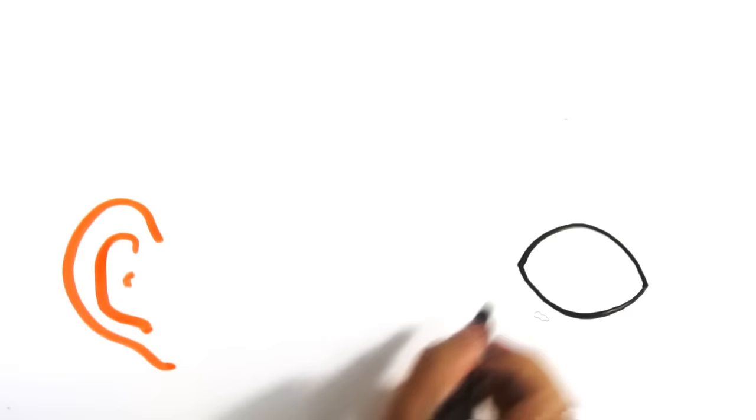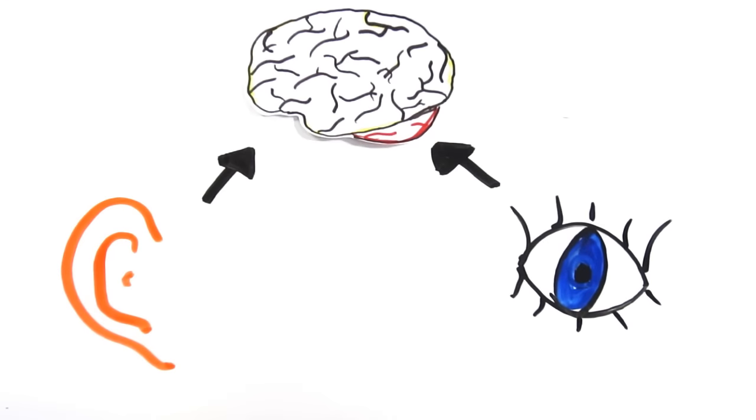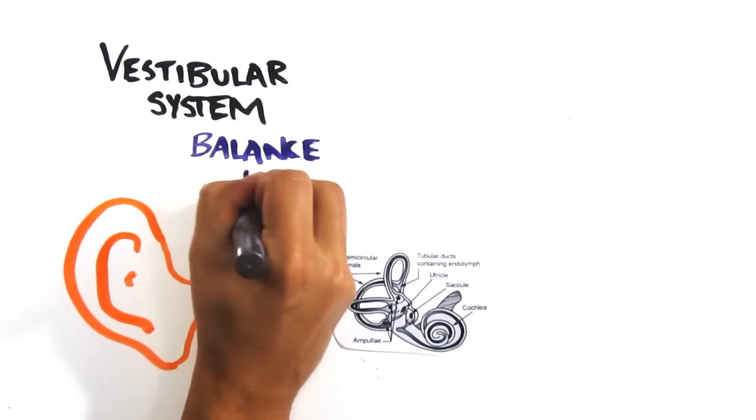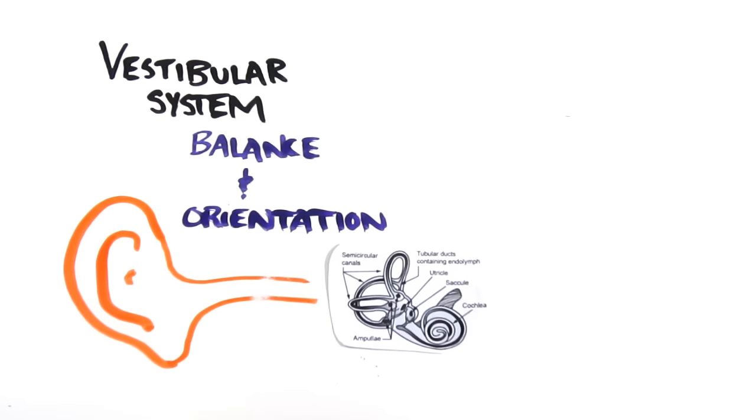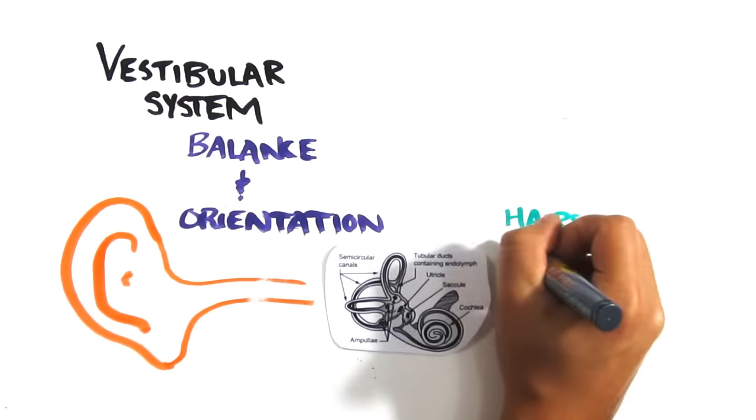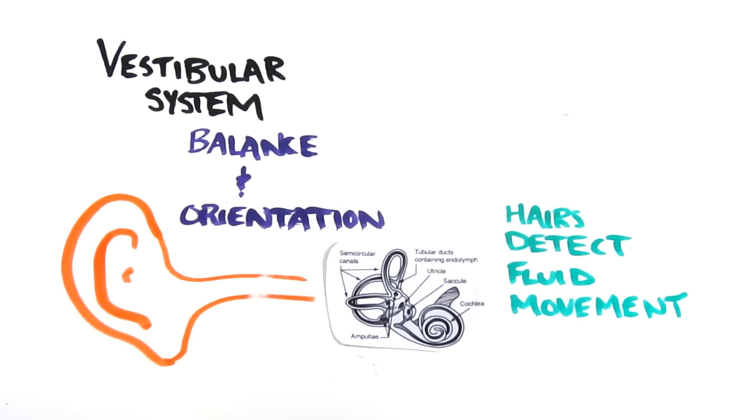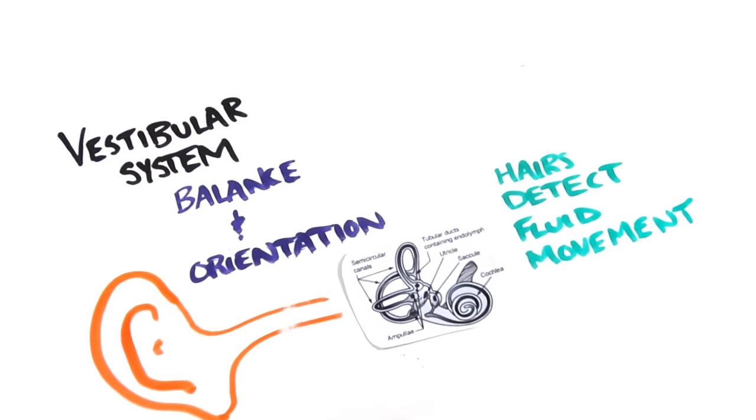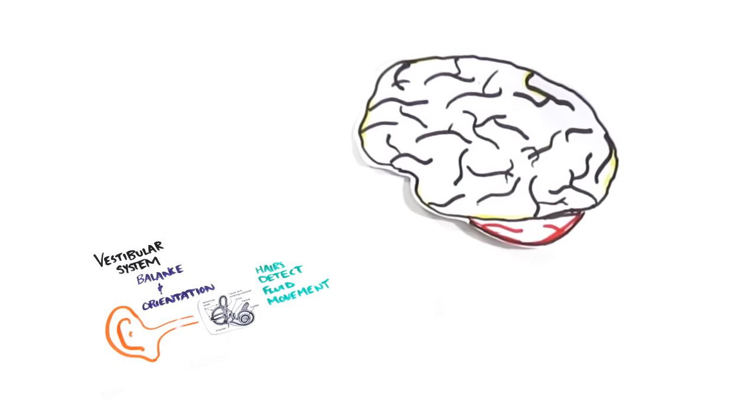This happens when your eyes and inner ear are sending different signals to the brain. The vestibular system inside your ear contributes to balance and spatial orientation. Tiny hairs inside the canal detect the movement of a fluid inside it, allowing you to orient yourself. If you lean to the side, the fluid moves and signals are sent to your brain to help you understand this.